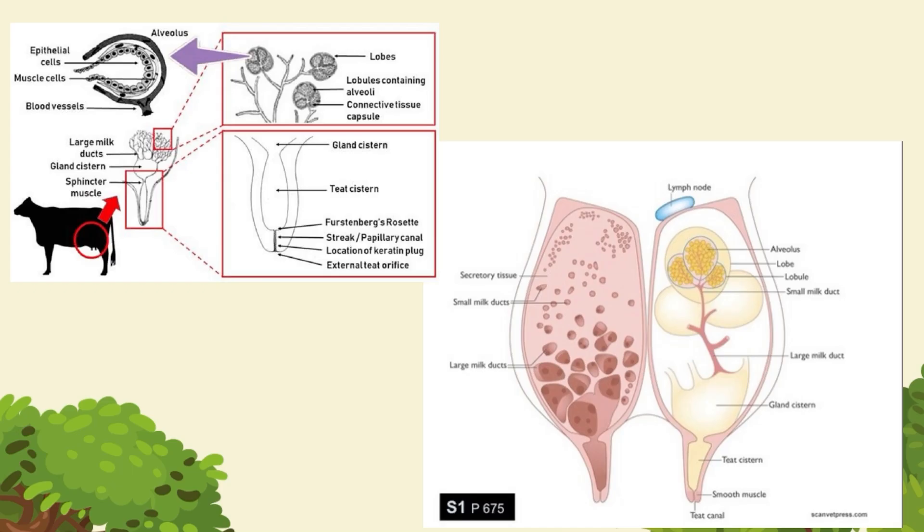The udder is formed of glandular tissue, fibrous tissue, and fat tissue. It consists of lobes. These lobes are made up of many lobules. The lobules consist of groups of alveoli. These alveoli open into small ducts. These small ducts unite to form the large ducts called lactiferous ducts.